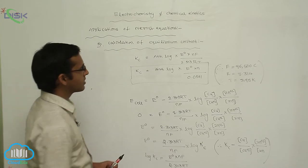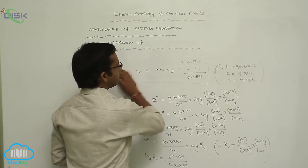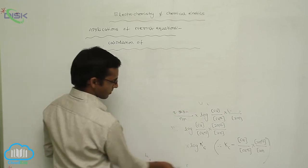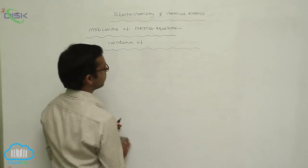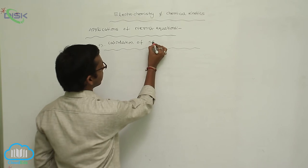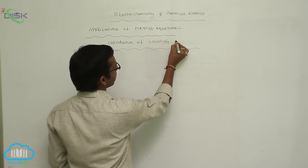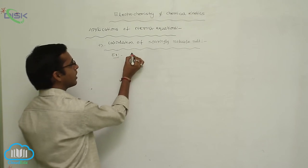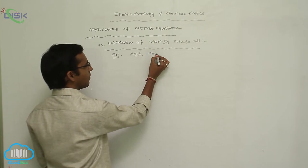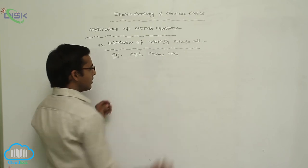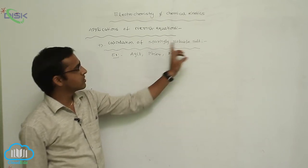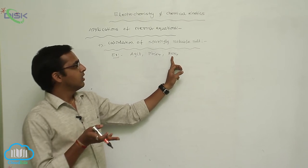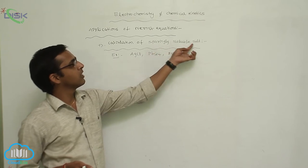This is the calculation of equilibrium constant. Another application — the fourth application of the Nernst equation — is the calculation for sparingly soluble salts. Examples are silver chloride, lead sulphate, and barium sulphate. These are sparingly soluble salts, meaning under ordinary conditions they are not soluble in water, but they dissolve slightly.